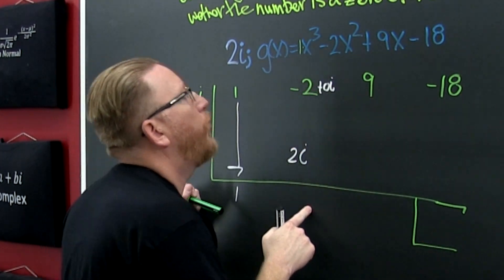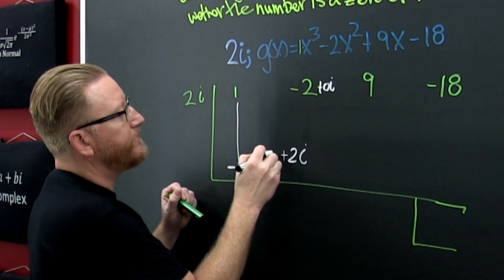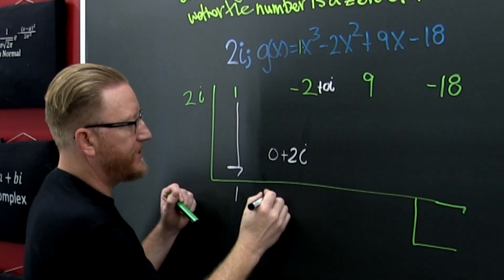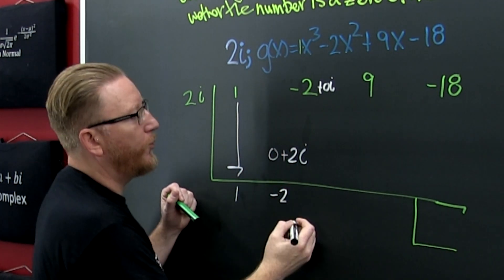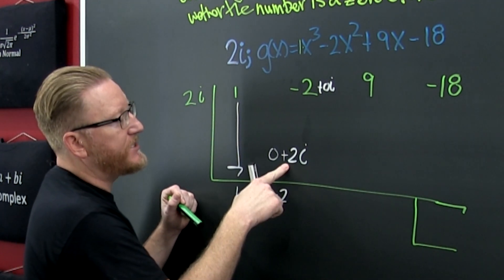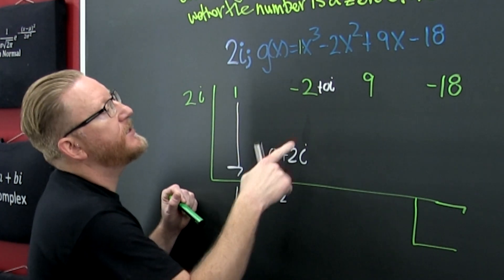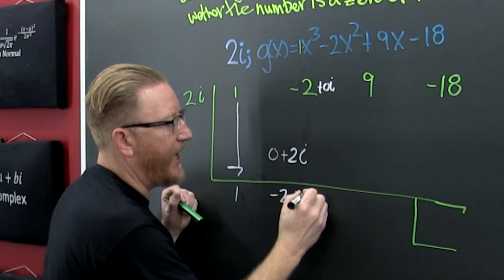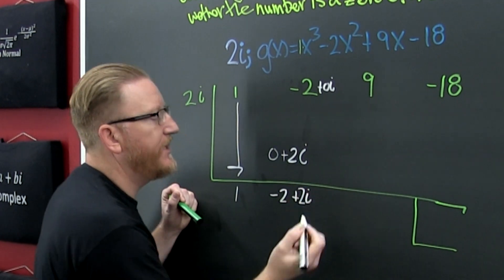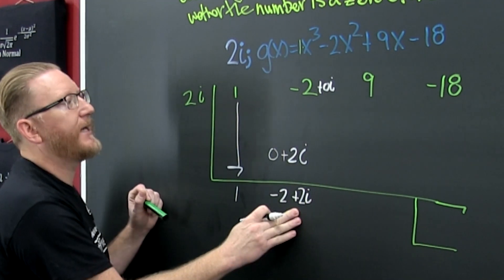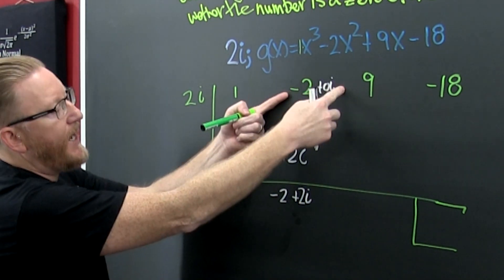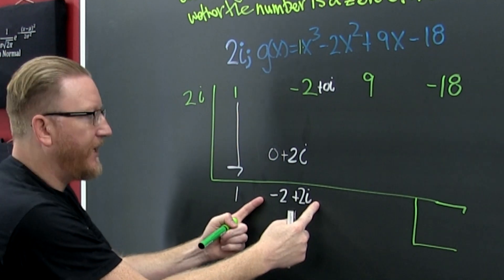Now what? I need to add the real part zero with that minus two. And then I add the imaginary part — the 2i and the no i — and I get 2i. Just like that. I added them crooked on down.